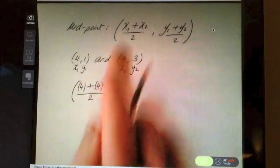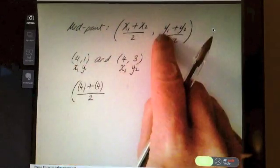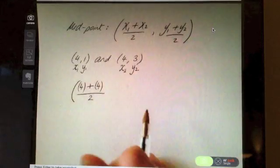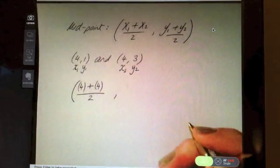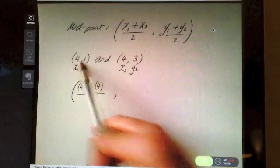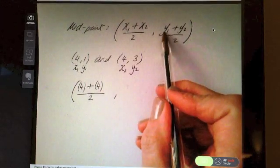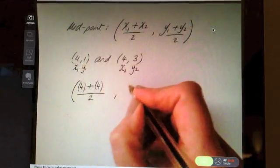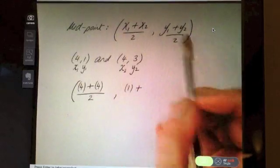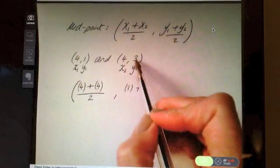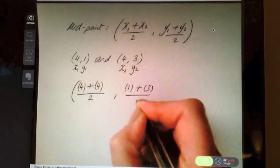That two doesn't change - that two will always stay divided by 2 because we're halving it. We're adding the two x values and halving it, and we're adding the two y values and halving it, and that makes sense in order to find the middle point. Now comma in between because this is of course a point, and all our points have a comma in between. Next we sub in the y1, and y1 here is 1, plus is next in the formula, and then y2, and y2 in this case is 3, and divide by 2.